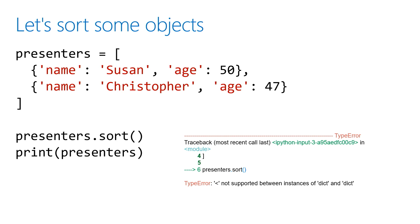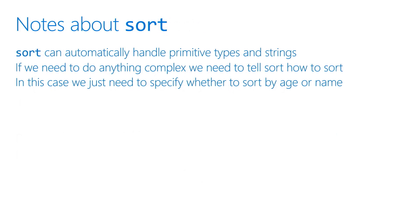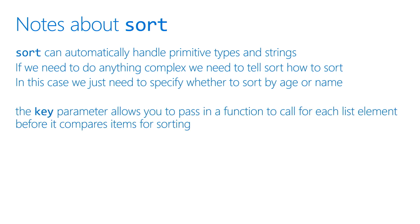Luckily, there's a neat feature with sort. It can handle regular types and strings, but for something complicated like this, there's something we can do called the key parameter. When you pass in a key parameter, you can specify a function that you want to be called for each element in the list before it compares the items for sorting. It's a way for you to say: when you're sorting, call this function and it'll tell you what value to look at — the age, the name, or something like that.